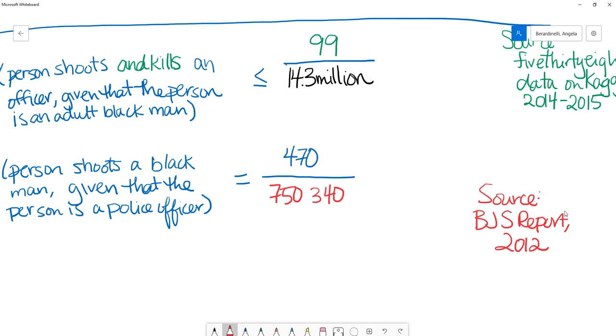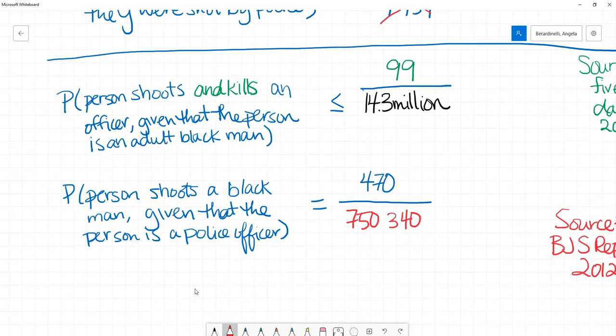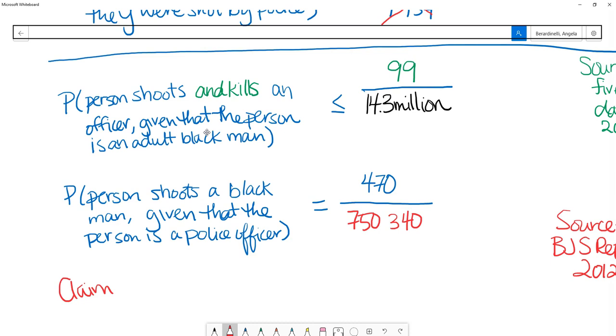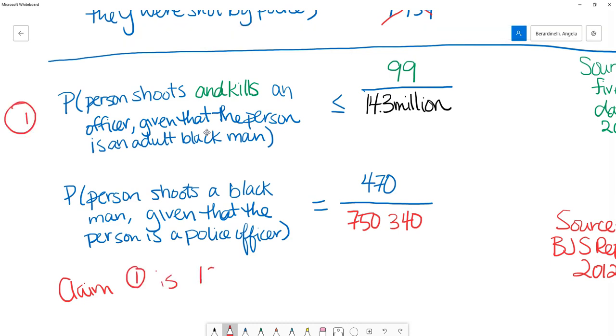We got the number of black men shot by police from the Kaggle data set that we used in the previous computation, and then we got the number of police officers from that Bureau of Justice Statistics report. These are not really comparable. This is not going to give us an accurate yes or no on whether or not that claim, the claim was that number one here is 18.5 times more likely than two. We can't definitively say this is correct or incorrect because we could only find data on officers getting shot and killed in the line of duty, not every officer who was shot in the line of duty and survived. So that number would be much higher here.